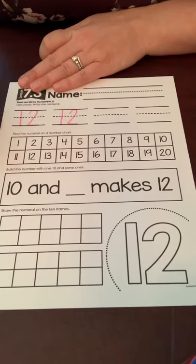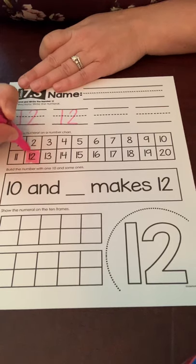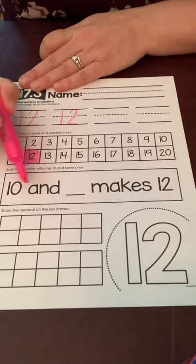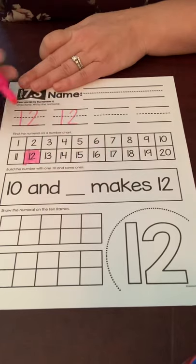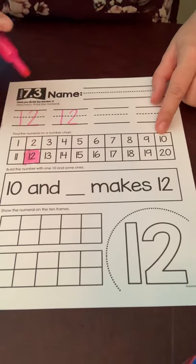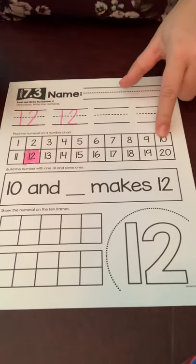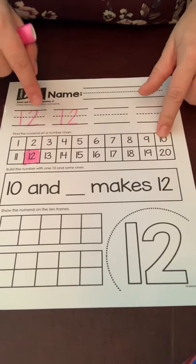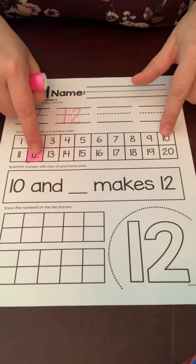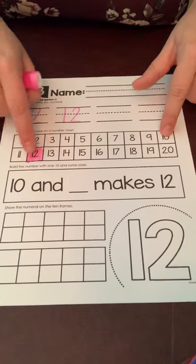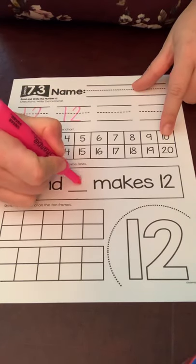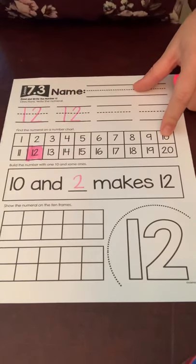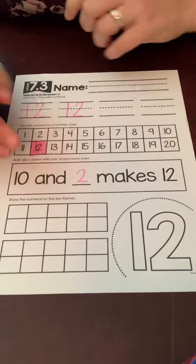Then you got to find the number 12 and color it in. Now they want to know 10 and what makes 12. 10 and how many more to make 12. So I'm going to put my finger on 10 and count to get to the 12. 10, 11, 12. There's two more. 10 and 2 make 12.